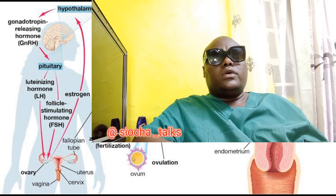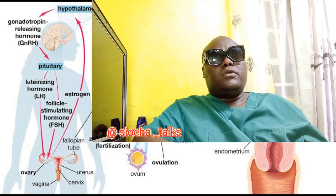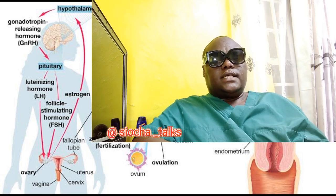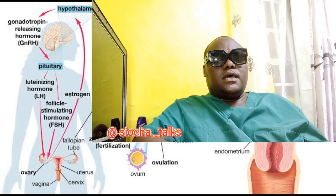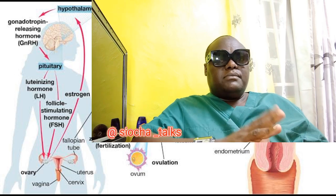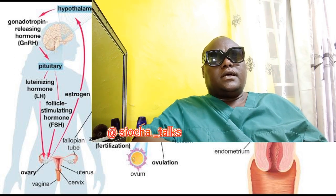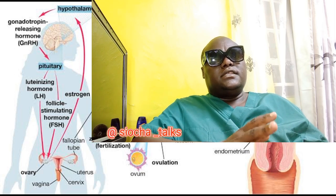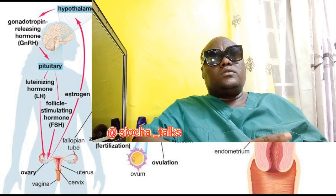Some women may also experience ovulation pain — a mild pain or discomfort on one side of the lower abdomen during ovulation. This is known as Mittelschmerz. It is generally a mild pain, but when it becomes very severe, it can be a sign of another condition.